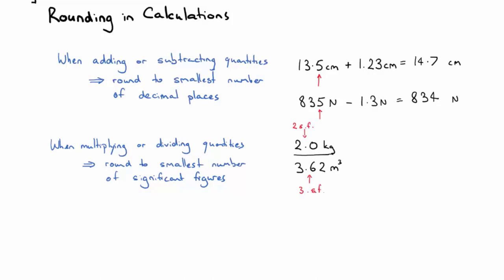So we need to round the final answer to 2 significant figures, which gives us, if we did it without rounding, it would be 0.55248, and that would be kilograms per cubic metre.